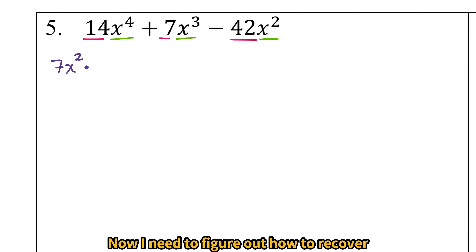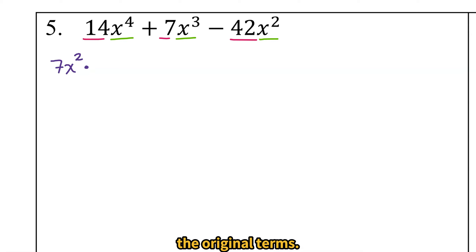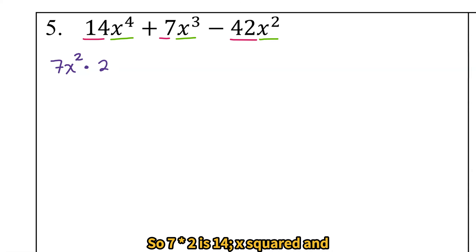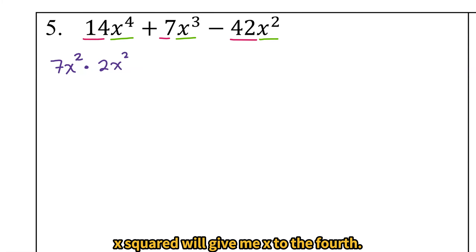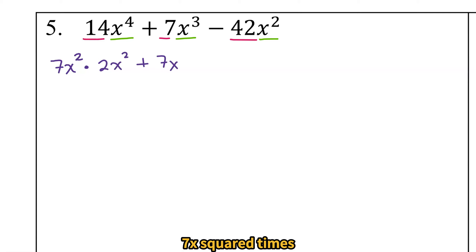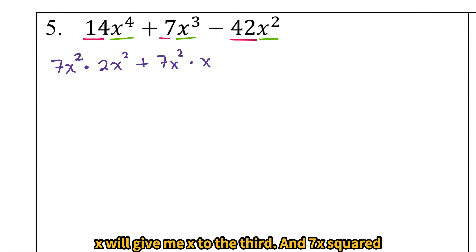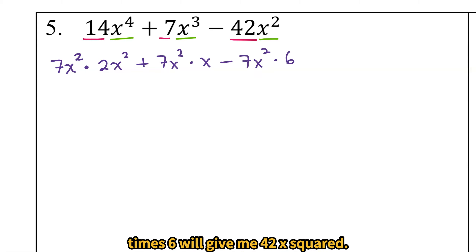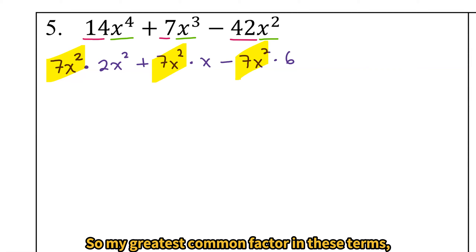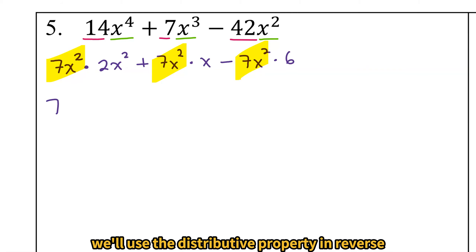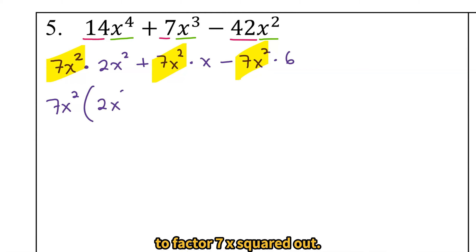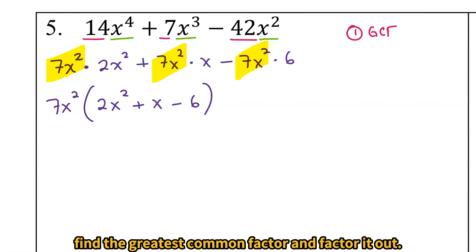Now I need to figure out how to recover the original terms — what do I multiply by the greatest common factor to get those original terms? So 7 times 2 is 14, x squared times x squared will give me x to the fourth. 7x squared times x will give me x to the third. And 7x squared times 6 will give me 42x squared. So 7x squared will use the distributive property in reverse to factor out.